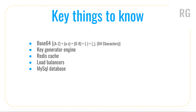The next is the Key Generator Engine. The Key Generator Engine is used in generating the unique ID with the help of Base64. We will have a separate application which helps to build the unique characters with the help of Base64 characters, and we will be using that in building the short URL.